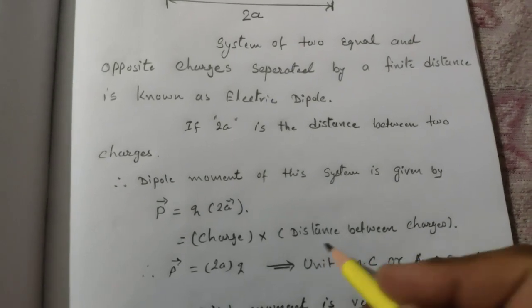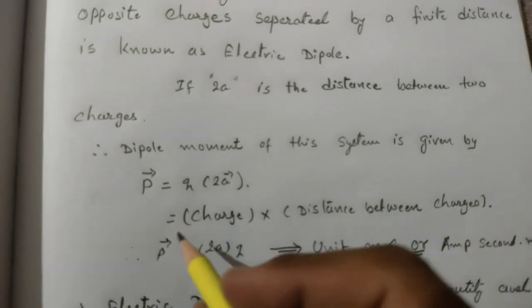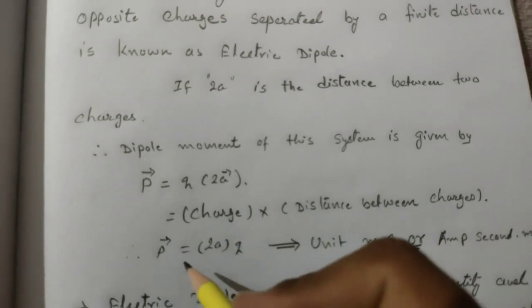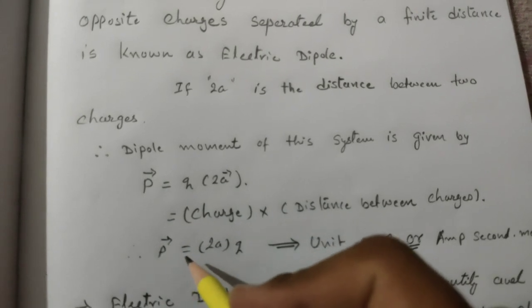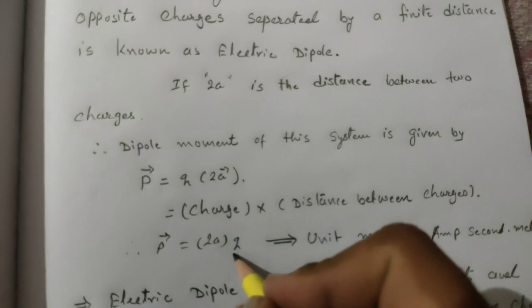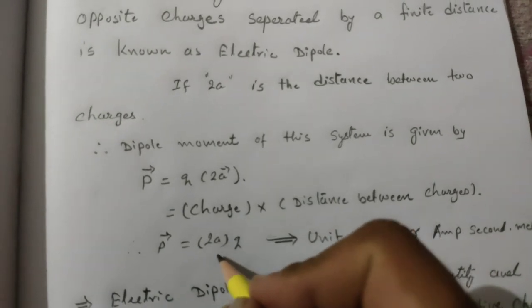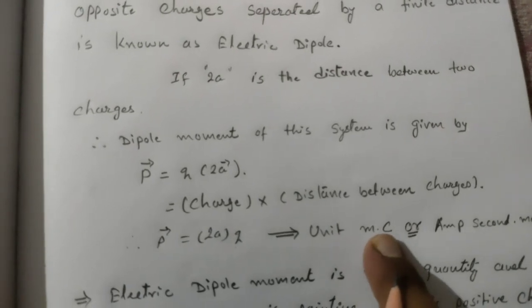Here we can write q into 2a. So this is a vector quantity, so arrow overhead of the vector, arrow overhead of the symbol is necessary. Over here, 2a is the distance and q is the magnitude of charge.